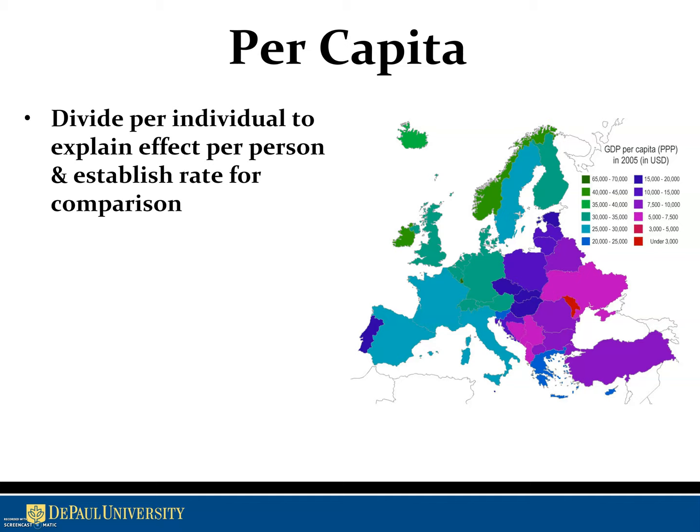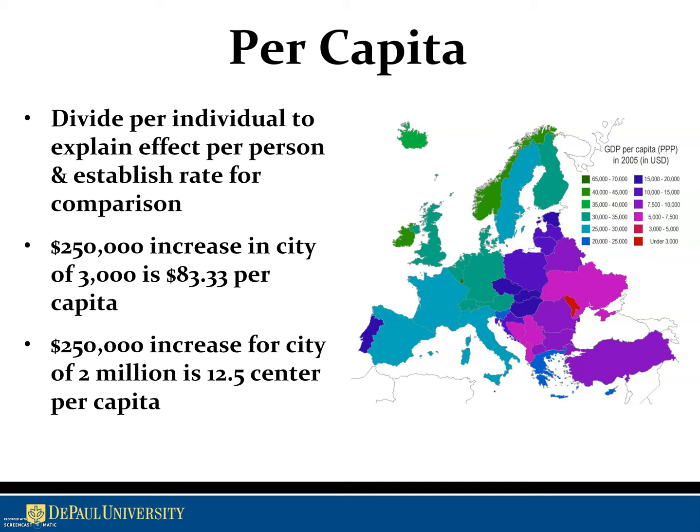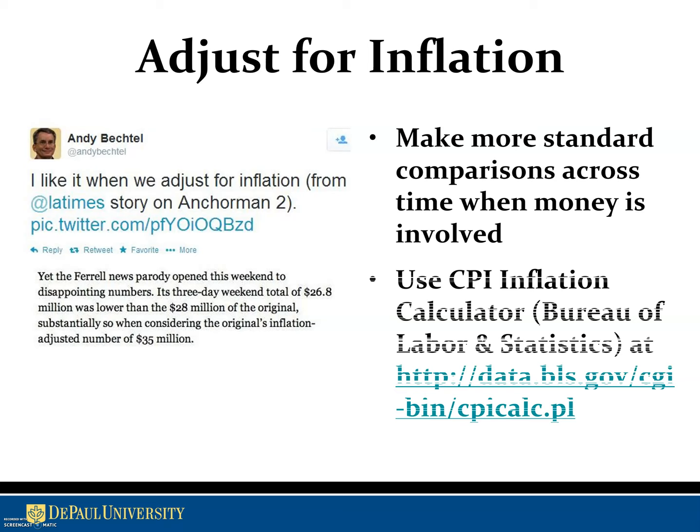We'll also talk about per capita — dividing by the number of individuals to explain an effect per person and establish a rate for comparison. It's really useful for census data and for comparing countries when you need to standardize for population size. For example, a $250,000 increase in a city of 3,000 is $83 per person, but in a much larger city of 2 million it's just 12.5 cents per capita.